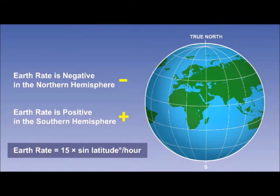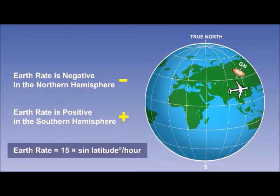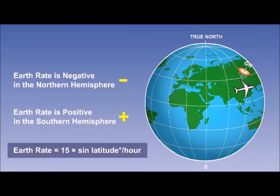In the case of transport wander, the additional factor is that the gyro itself is moved across the earth. Although earth rate and transport wander occur at the same time, when we come to do calculations, we calculate the error for transport wander separately and add or subtract it to the equation for total wander. We will look at this in more detail in the companion lesson on drift rate calculations.